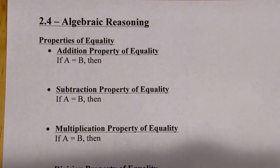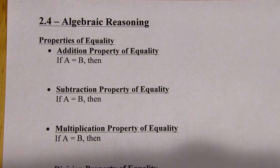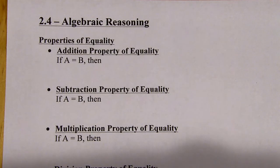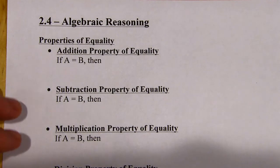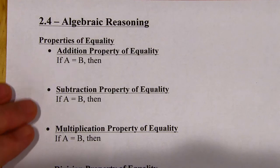2.4 Algebraic Reasoning. If you know your algebra, this is going to be a whole lot of review in this section. It's some of the basic properties in algebra. But we're going to do some light algebraic proofs, and that's going to get us ready for doing geometric proofs.